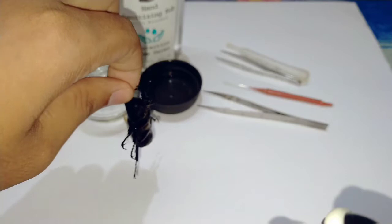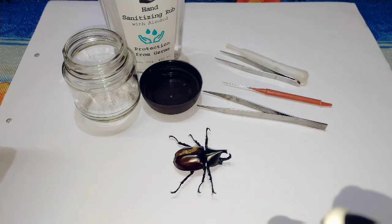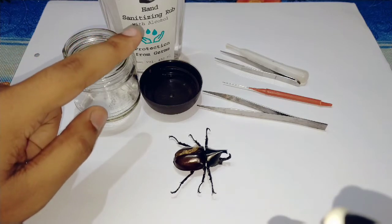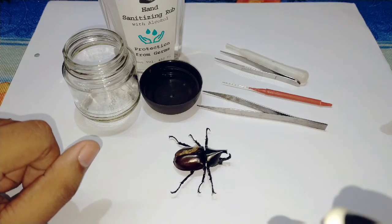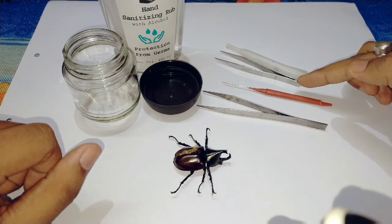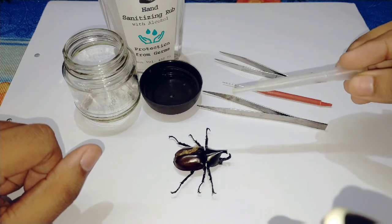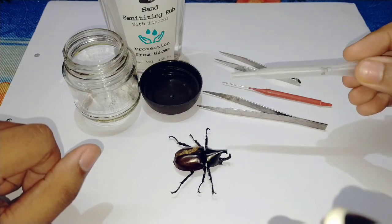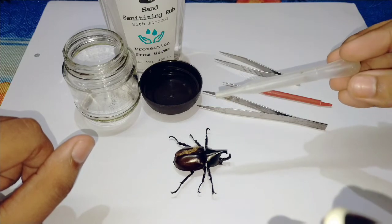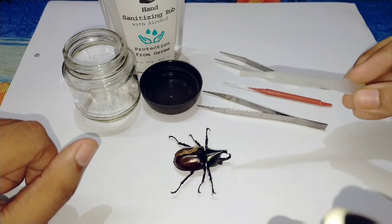So let's start the video. To preserve this rhino beetle, we need an empty container, hand sanitizer, forceps, needle, and this is a small forceps. And we need this dropper. If bubbles are created when we pour the hand sanitizer in the container, this dropper will help us to remove the bubbles. So let's start preserving this insect.